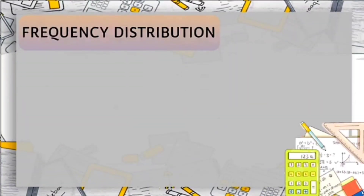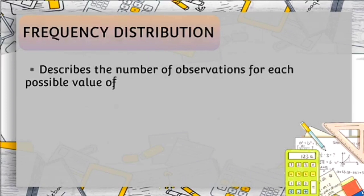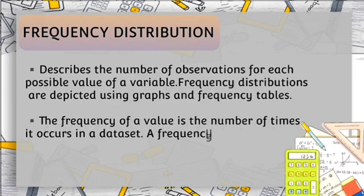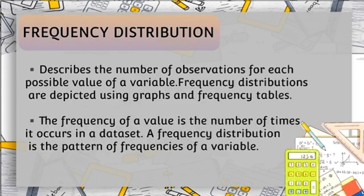Hi, guys. Welcome to our video. For today's video, we will be discussing about frequency distribution, and this is Mathematics in the Modern World. So, what is frequency distribution? It describes the number of observations for each possible value of a variable. Frequency distributions are depicted using graphs and frequency tables. The frequency of a value is the number of times it occurs in a dataset. A frequency distribution is the pattern of frequencies of a variable.